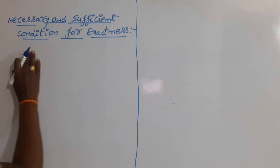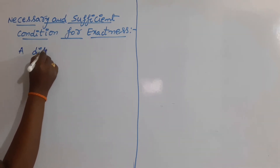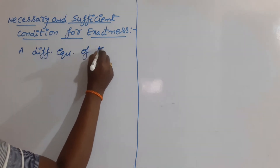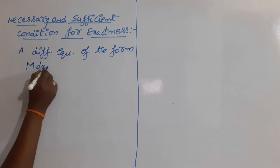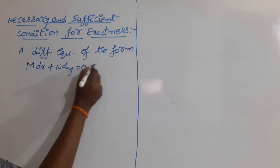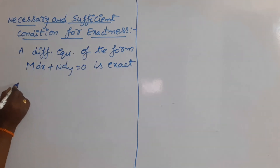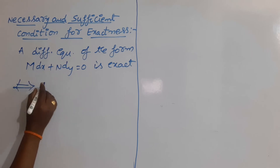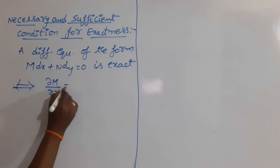The necessary and sufficient condition for exactness: a differential equation of the form M dx plus N dy = 0 is exact if and only if ∂M/∂y is equal to ∂N/∂x.